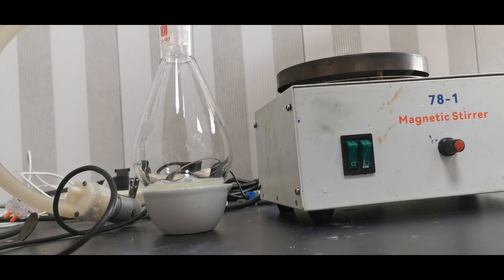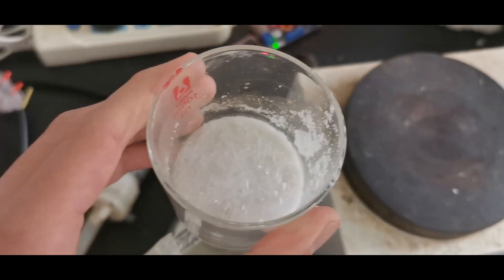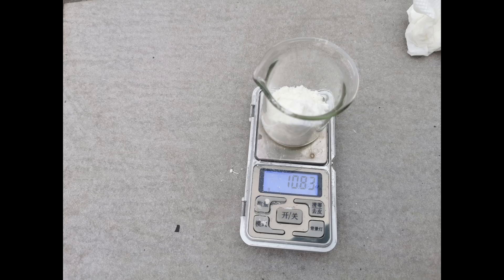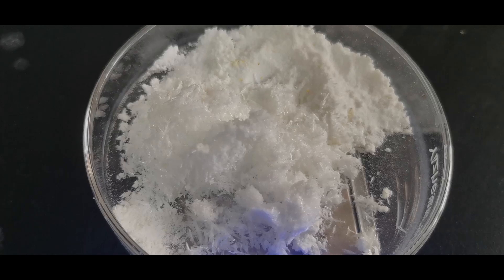After the mixture cooled to room temperature, I simply filtered it to harvest the second batch of crystals, and they weigh 4.5 grams. The two batches are combined and dried in the oven, and we end up with 10.83 grams of dry and mostly pure ammonium perchlorate.